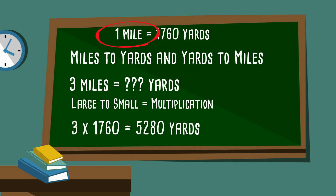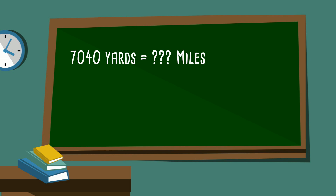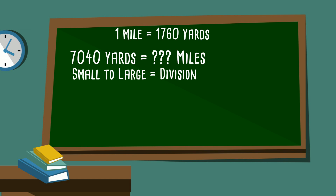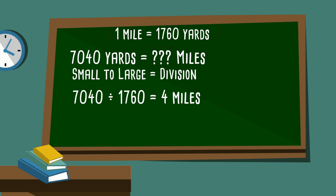3 miles equals how many yards? So 3 times 1,760 yards equals 5,280 yards. The next one: 7,040 yards equals how many miles? Yards is smaller than miles, so we're going from small to large, so we're going to divide. Your hint is 1 mile equals 1,760 yards. So 7,040 divided by 1,760 equals 4. So our answer: 7,040 yards equals 4 miles.